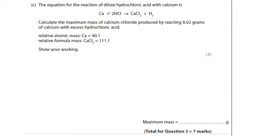The equation for the reaction of dilute hydrochloric acid with calcium is: Ca + 2HCl → CaCl₂ + H₂. Calculate the maximum mass of calcium chloride produced by reacting 8.02 grams of calcium with excess hydrochloric acid. To start, put the known mass and what you need to calculate next to the equation — 8.02 g of calcium is given, and we want the mass of calcium chloride. The mole ratio is 1 mole of calcium to 1 mole of calcium chloride.